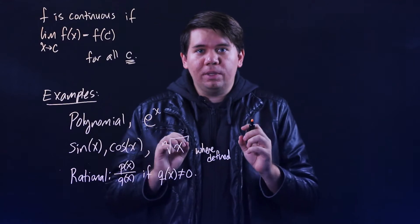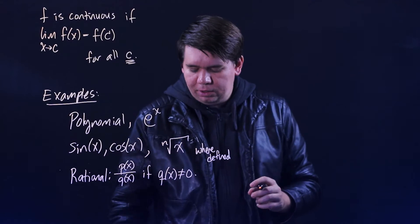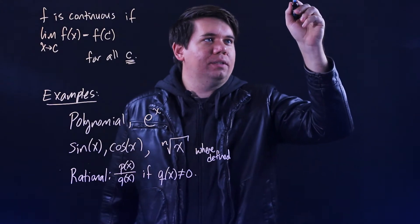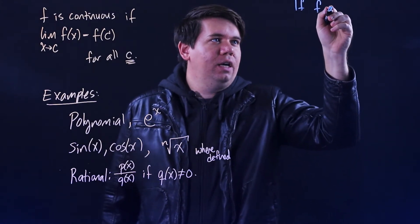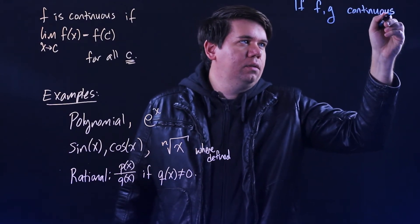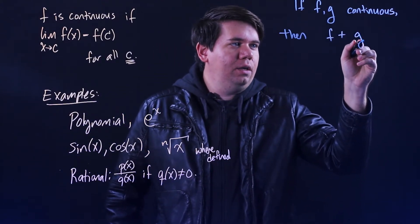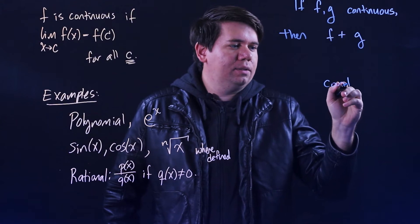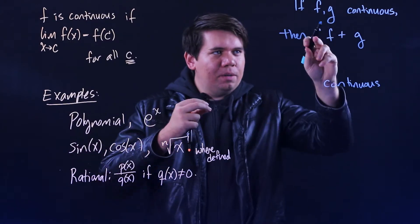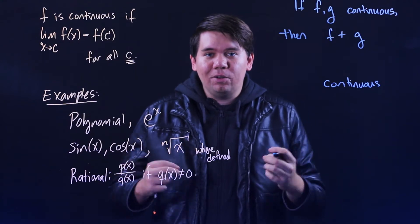But we can say something a little bit stronger. It's not just that these functions by themselves are continuous, but when you start combining these functions, they're still continuous. So here are some properties. If you have two functions, if f and g are both continuous functions, then other things like f plus g will still be continuous. If there were no holes or no jumps, you can think that when you combine them, you're not going to introduce any holes. You're not going to introduce any jumps. There won't be any discontinuities that suddenly appear.